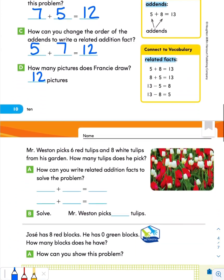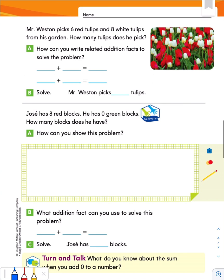Let's turn to page 11. Mr. Weston picks six red tulips and eight white tulips from his garden. How many tulips does he pick? How can you write related addition facts to solve the problem? We know six plus eight — let's count on from six: 7, 8, 9, 10, 11, 12, 13, 14. Then let's create the related addition fact by switching the addends: eight plus six also equals fourteen, the same sum. So Mr. Weston picks fourteen tulips.